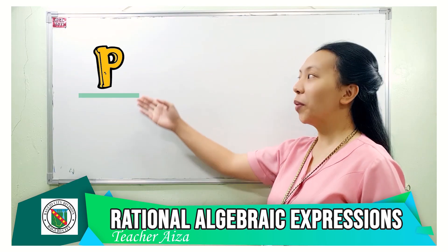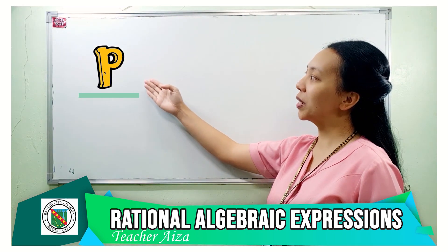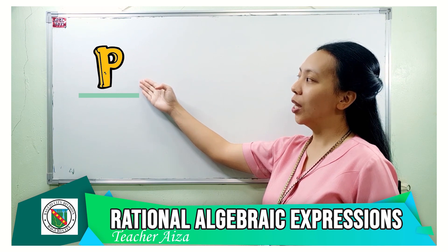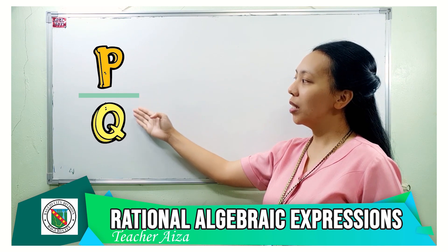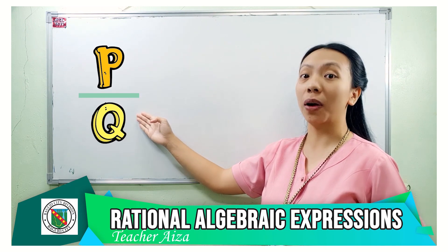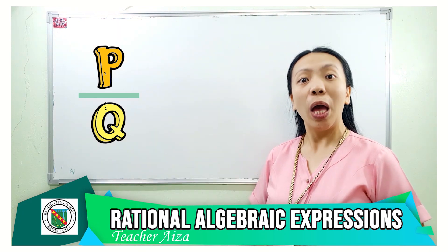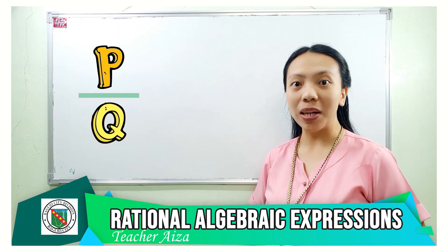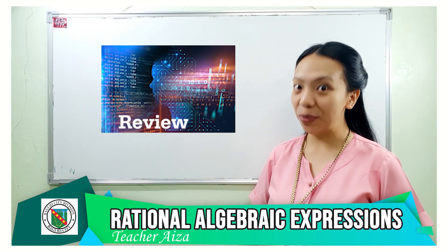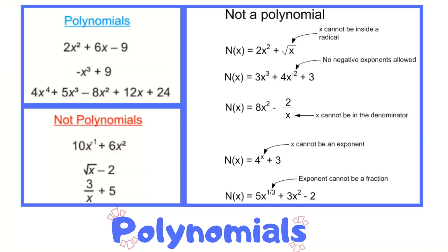The numerator is represented by the variable p, while the denominator is represented by the variable q. But what are polynomials? Let's review. An expression is a polynomial if every variable of that expression has a whole number exponent.